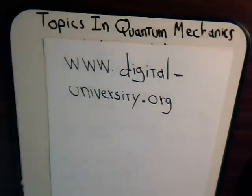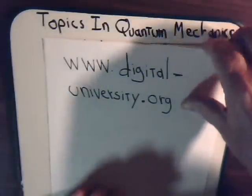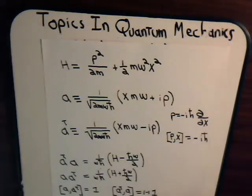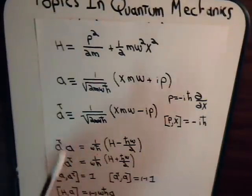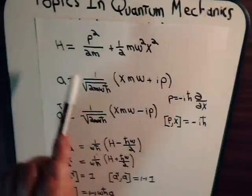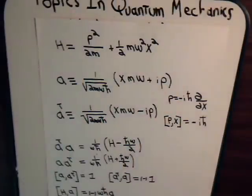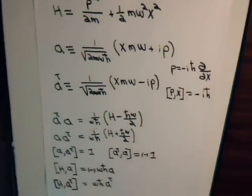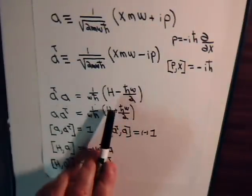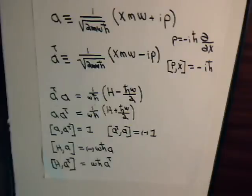This is video 26 in our series on Topics in Quantum Mechanics. The playlist for all of our videos is at digital-university.org. We have spent several videos discussing a new operator introduced in video 23, and what the Hamiltonian looks like for a one-dimensional harmonic oscillator. We then spent a couple of videos deriving relationships with our new operators A and A†.